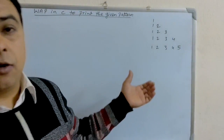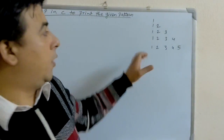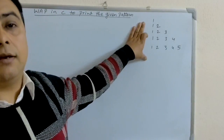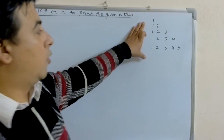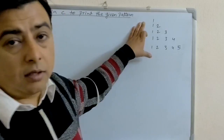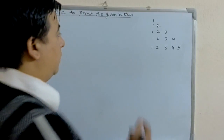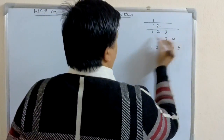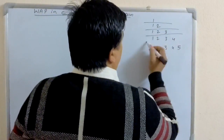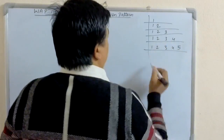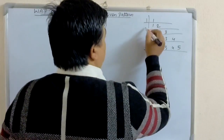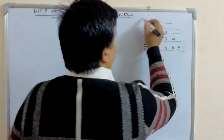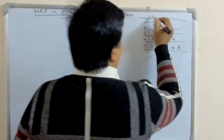In the previous video, we printed the pattern in the form of asterisk sign. Now we are going to print this pattern. In the first row we have to print only one number. There are 5 rows and 5 columns.